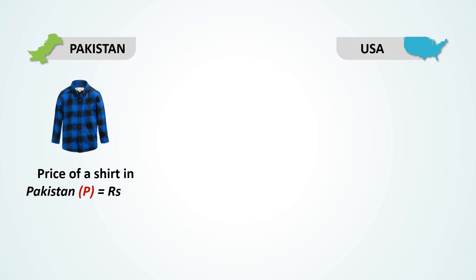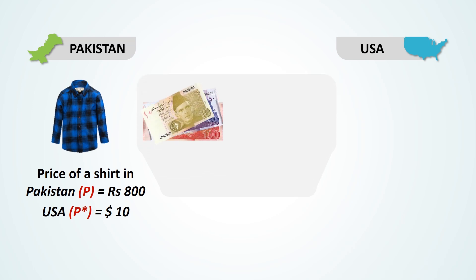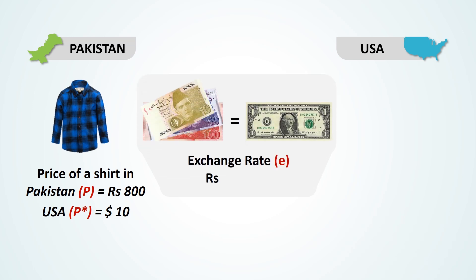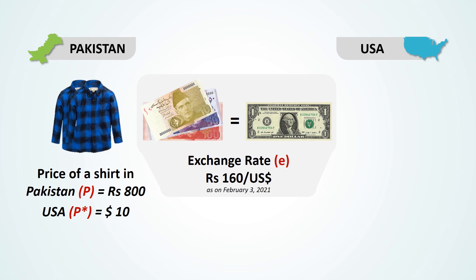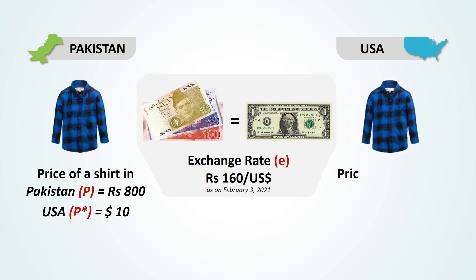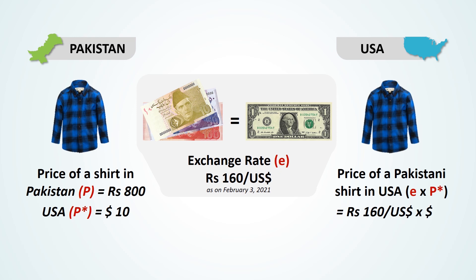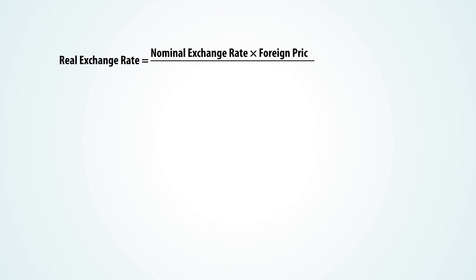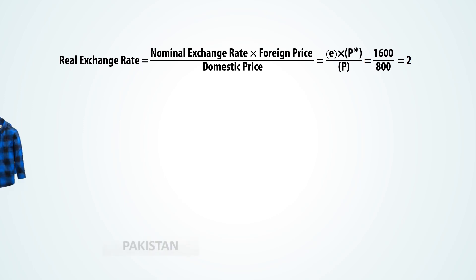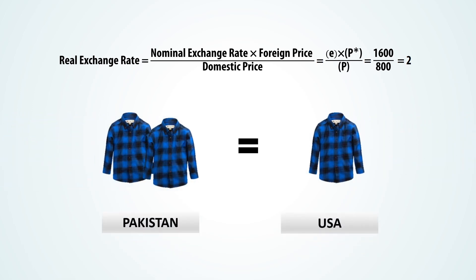Let's suppose that the price of one unit of domestic good is Rs. 800, and for a similar foreign good, it is $10. To know how many units of foreign good one unit of domestic good can purchase, first we need to convert the foreign price into the domestic currency. Given a nominal exchange rate of Rs. 160.18 to a dollar on February 3rd, 2021, the domestic price of one unit of foreign good is therefore around Rs. 1600. To get the real exchange rate, we need to divide Rs. 1600 by Rs. 800, which is equal to 2. This means that two units of domestic good can be exchanged with one unit of foreign good.